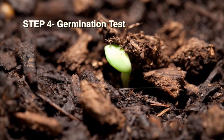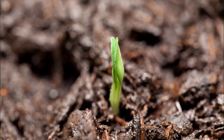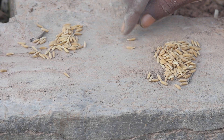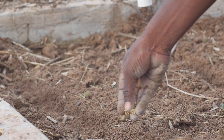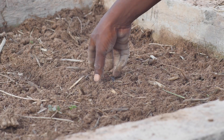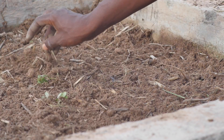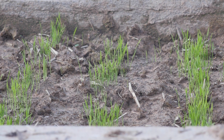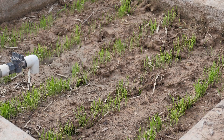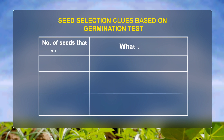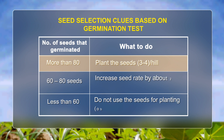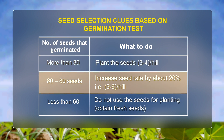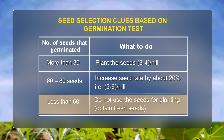Step 4: Conduct a germination test before planting. Stages: 1. Select 100 seeds. 2. Plant the seeds in a small area and cover with soil, or place the seeds on a moist cloth, cotton or tissue paper, and cover. 3. Count the number of seeds that germinated between 4 and 7 days. Seed selection based on germination test: if more than 80 germinate, plant 3 to 4 seeds per hill. If 60 to 80 seeds germinate, increase seed rate by about 20%, that is 5 to 6 seeds per hill. If less than 60 germinate, do not use the seeds — obtain fresh seeds.